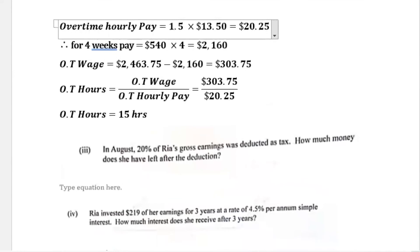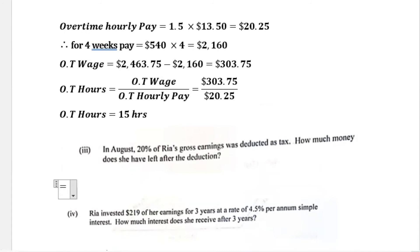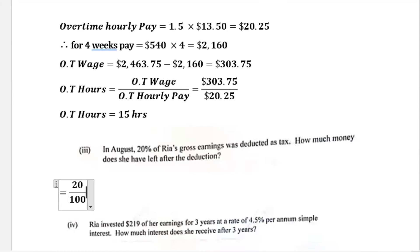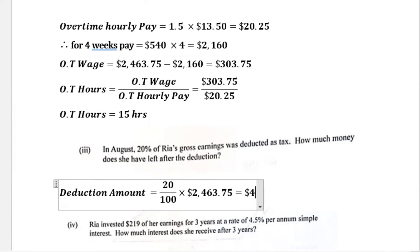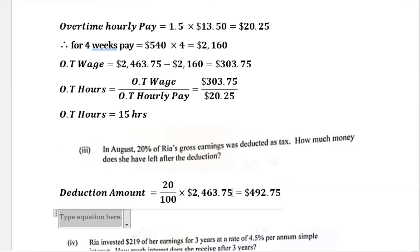Part three says in August, 20 percent of Ria's gross earnings was deducted as tax. How much money did she have left after the deduction? We calculate 20 percent as 20 over 100 multiplied by her gross earnings of $2,463.75. The deduction amount works out to $492.75.